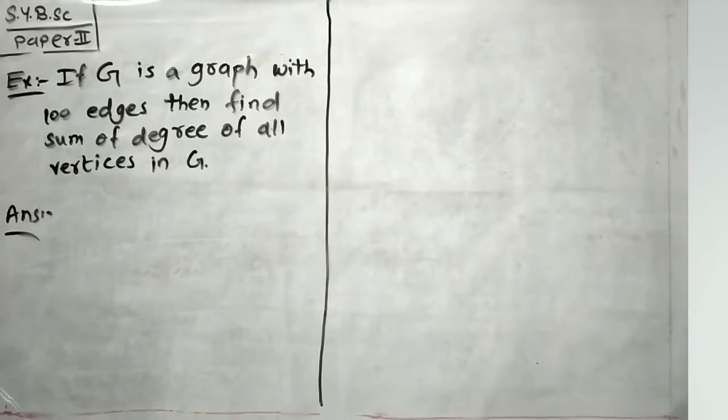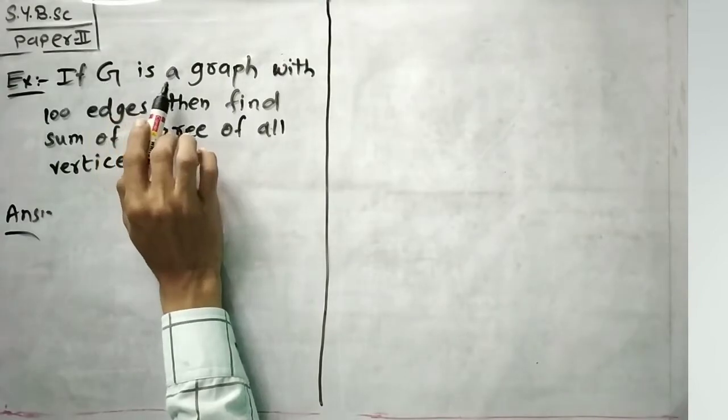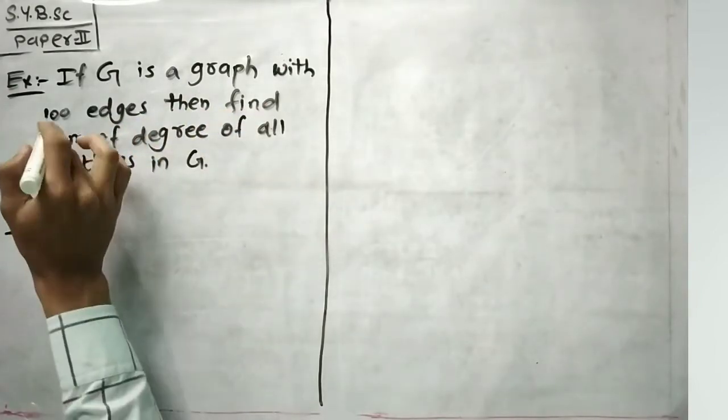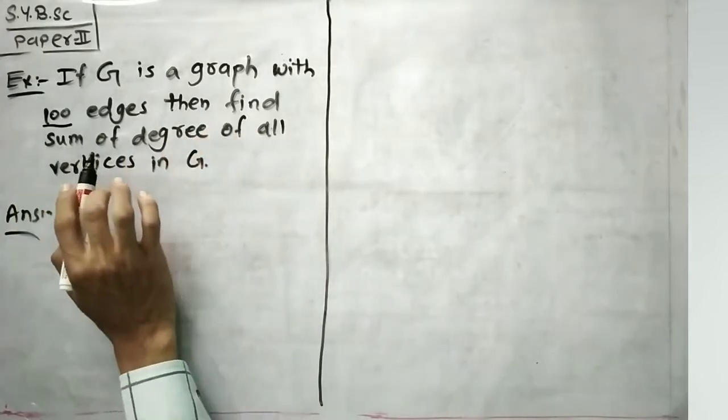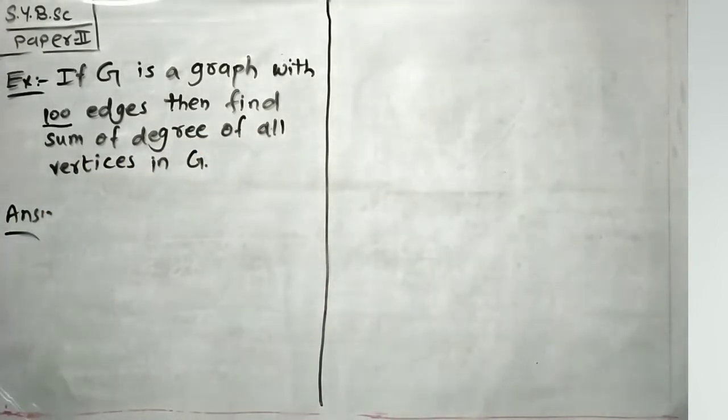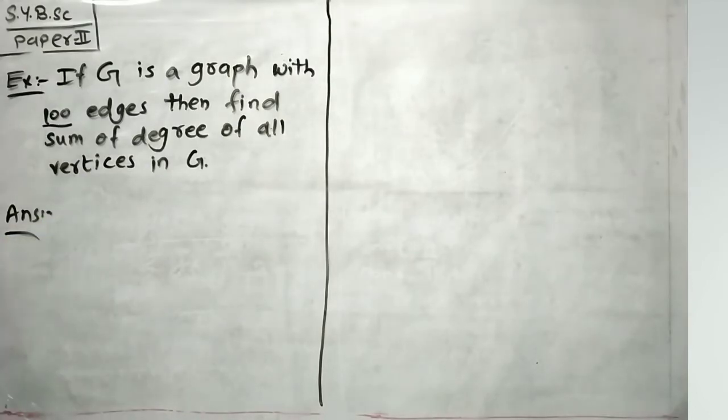Based on this hand shaking lemma, there is one example. See what is the example: If G is a graph with hundred edges, then find the sum of degree of all vertices in G. Simple, we use the formula that we proved in the theorem.